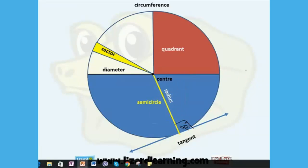90 degrees to each other. We call the radius and the tangent perpendicular, the radius is perpendicular to the tangent. The tangent is a line that just touches the circumference of the circle.